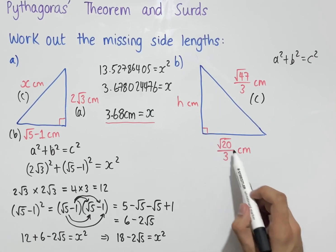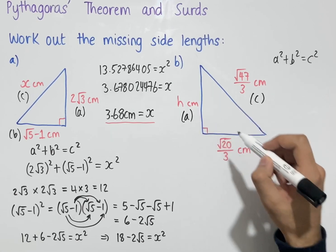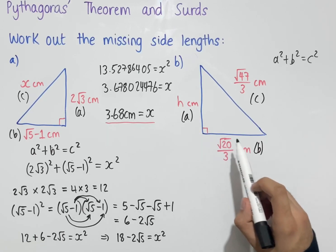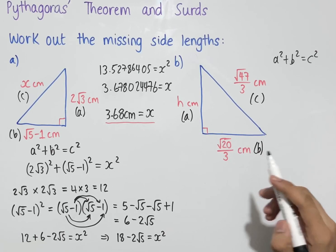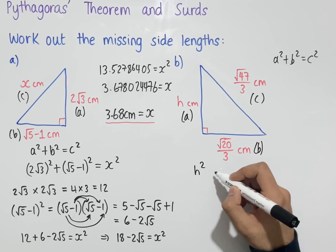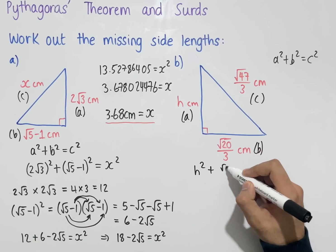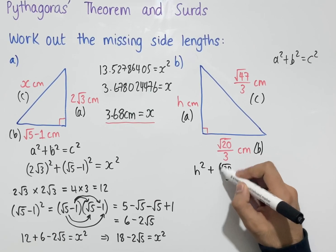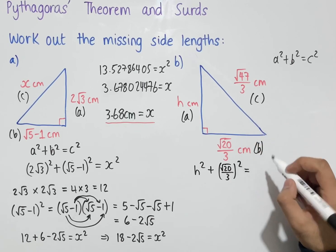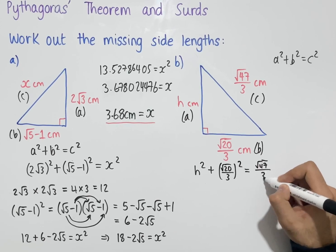The other two side lengths we can label however we like. We'll label h as a and √(20/3) as b. Substituting into Pythagoras' theorem: h² + (√(20/3))² = (√(47/3))².